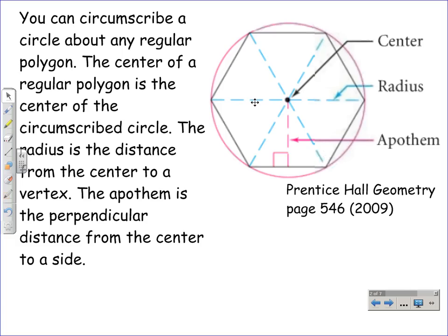The apothem is the perpendicular distance from the center to a side, and that would be represented right here by this pink line. It's perpendicular, it's also the angle bisector. It'll be very useful to understand that fact that it's an angle bisector.